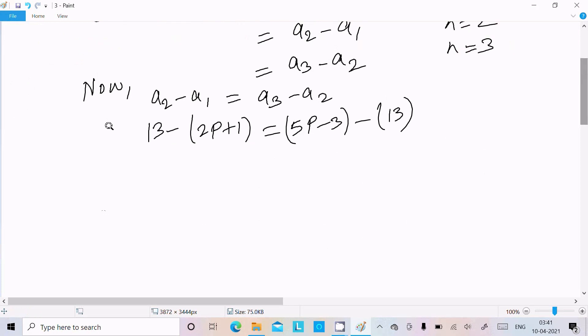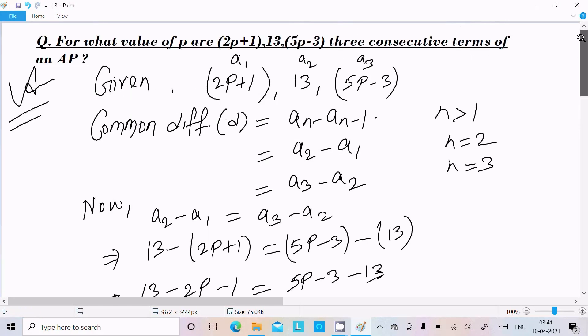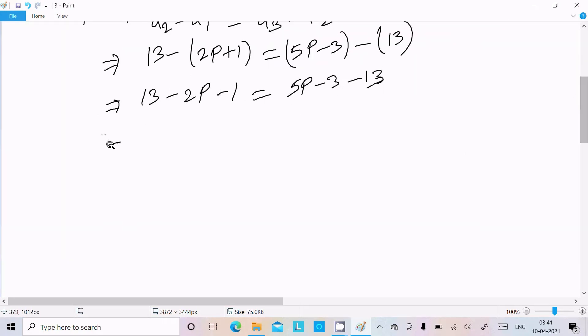Solve this equation and you can easily find out the value of p. So this is 13 minus 2p minus 1. Here 5p minus 3 minus 13. After that you can easily find out, so 13 minus 1 that is 12, here this is 2p.